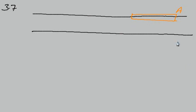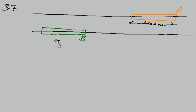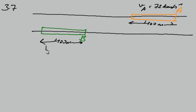Train B (green) is behind train A. Both trains are of length 400m — length of train A is 400m and length of train B is also 400m. Both are moving with a uniform speed of 72 km/h. Velocity of A is 72 km/h and velocity of B is also 72 km/h.